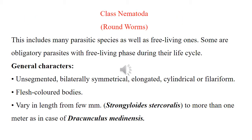Class Nematoda — the roundworms. This includes many parasitic species as well as free-living ones. Some are obligatory parasites with free-living stages during their life cycle. General characters of roundworms: unsegmented, bilaterally symmetrical, elongated, cylindrical or filiform. Flesh-colored bodies. They vary in length from a few millimeters, as in Strongylus circularis, to more than one meter, as in Dracunculus medinensis.